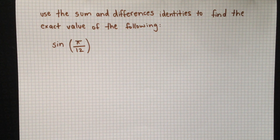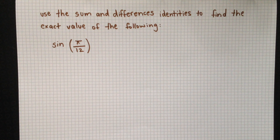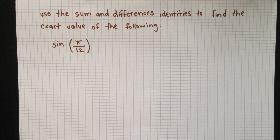The question states: use the sum and difference identities to find the exact value of sine of pi over 12.